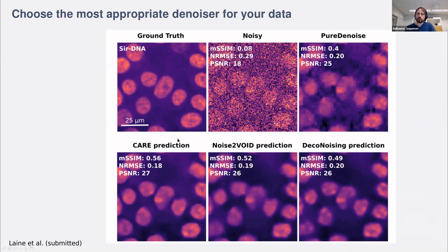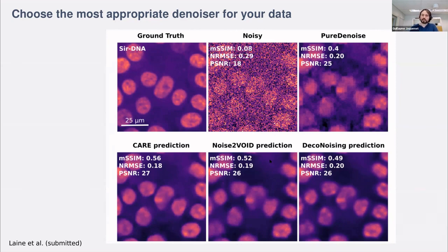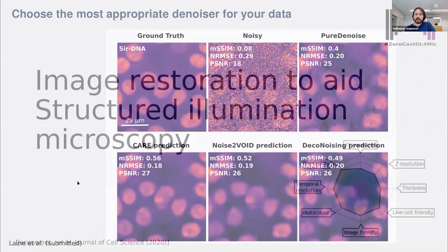As part of Zero Cost Deep Learning for Microscopy, we now provide three different denoising networks: CARE, Noise2Void, and DecoNoising. It's really useful to use quality control metrics to identify the best denoising strategy for your data. Importantly, deep learning is not the only way to denoise — there are many classical algorithms, and it's always good to compare. Avoid the deep learning hype: always do a sanity check to verify it's truly optimal. In this particular example, CARE performs best compared to the PureDenoising Fiji plugin.